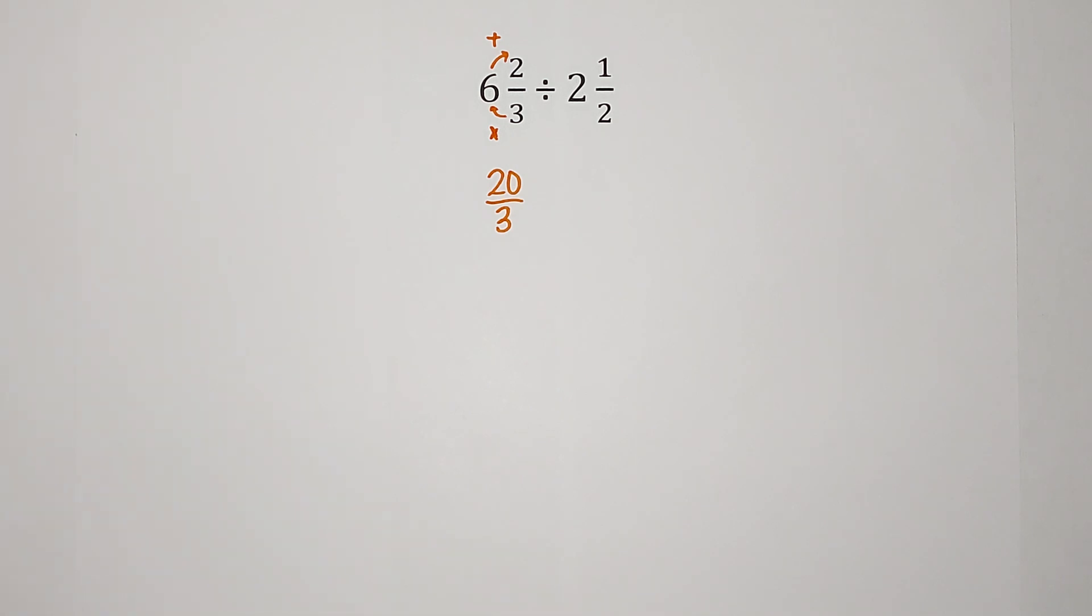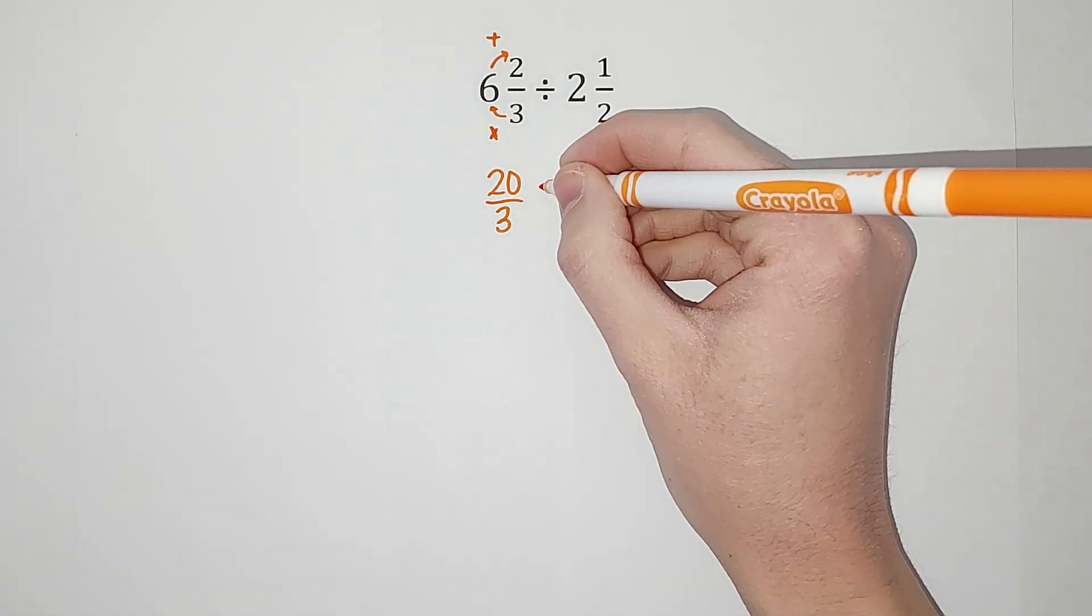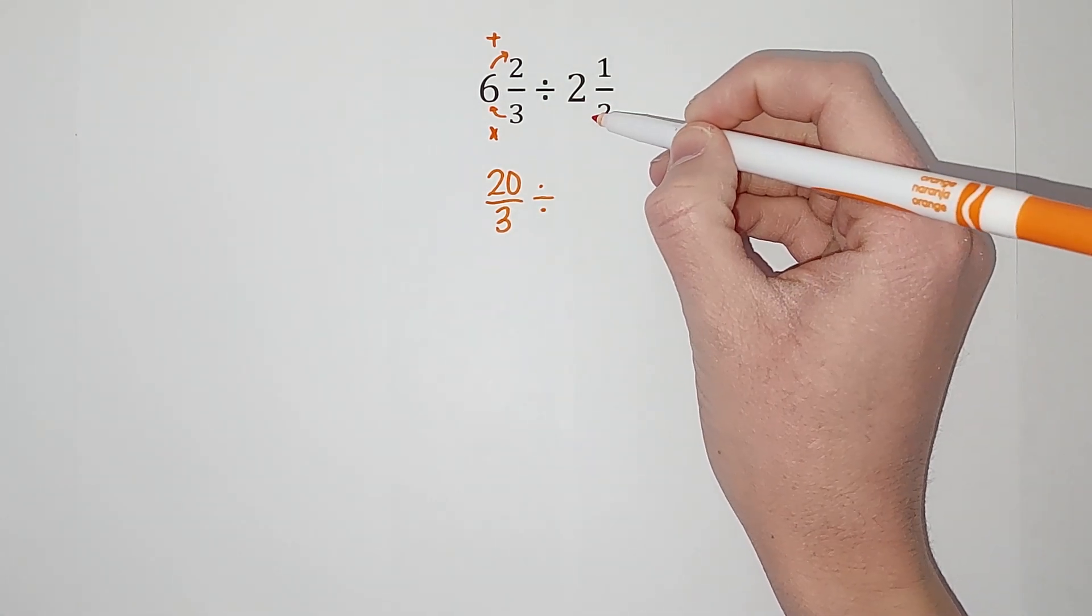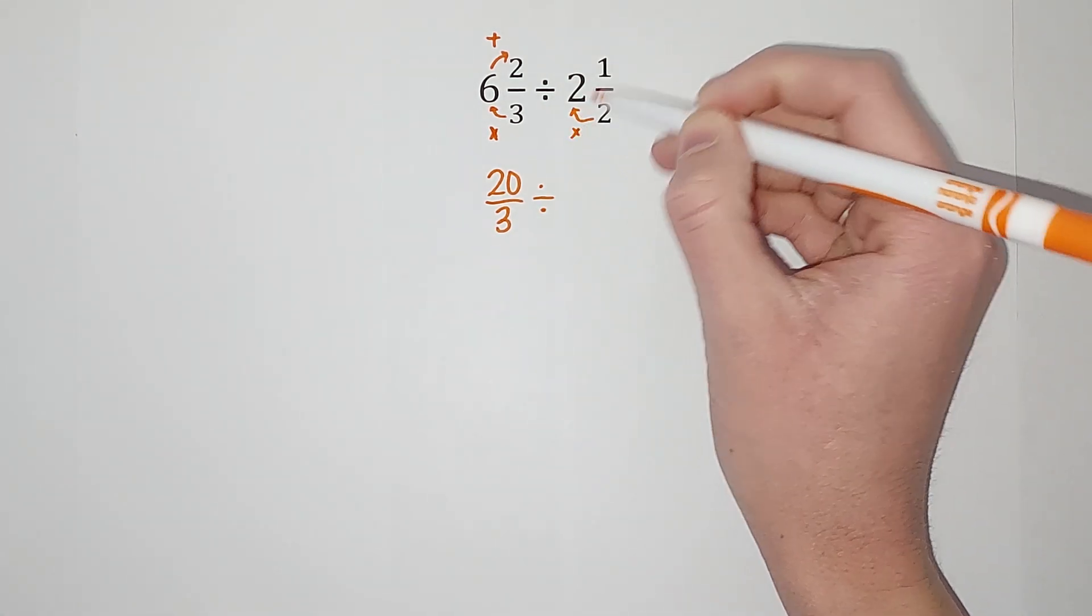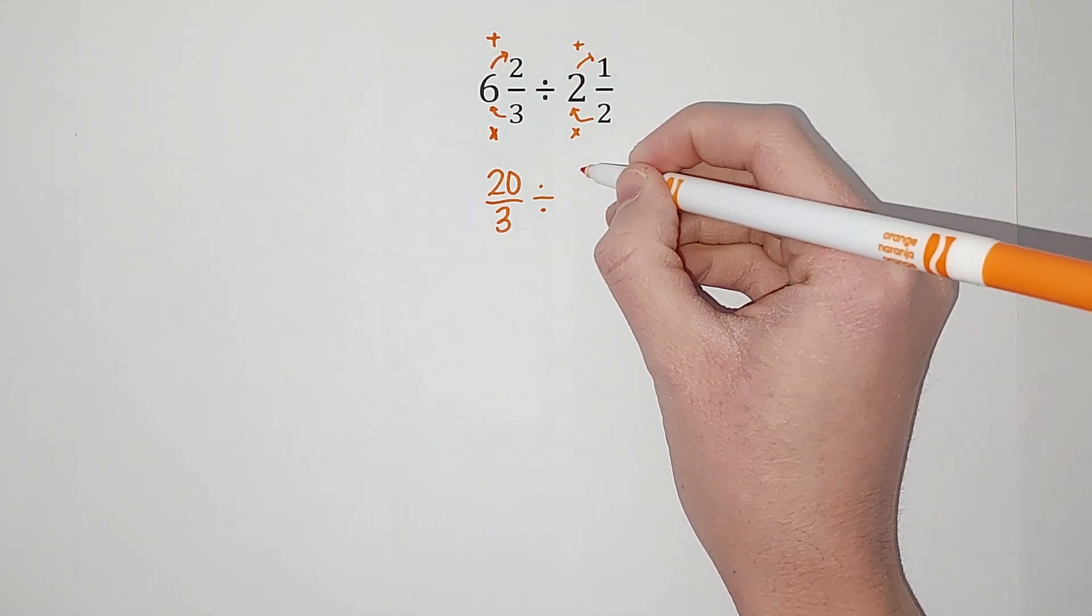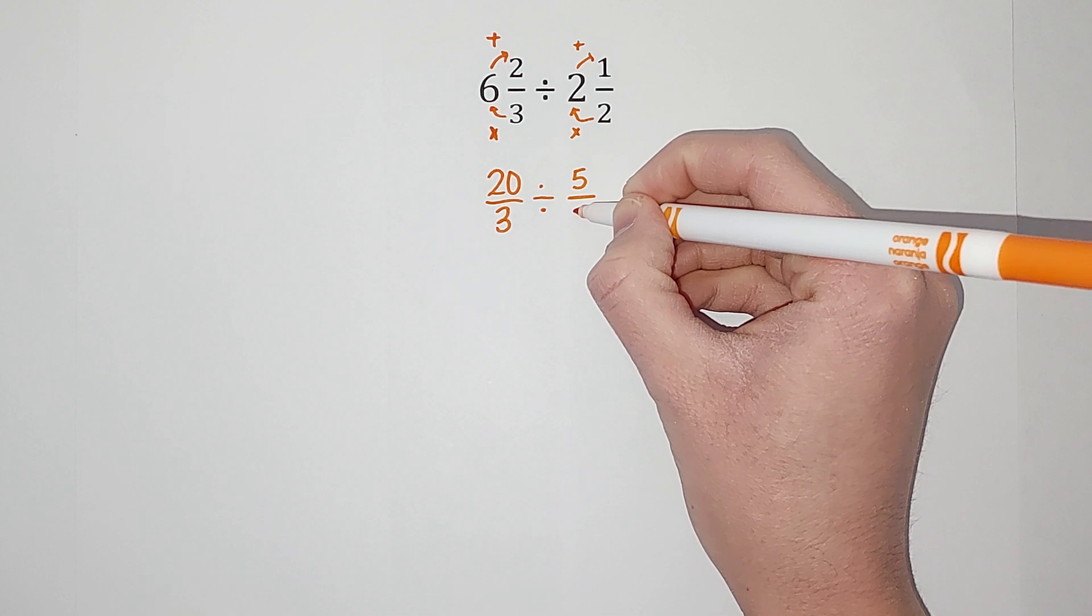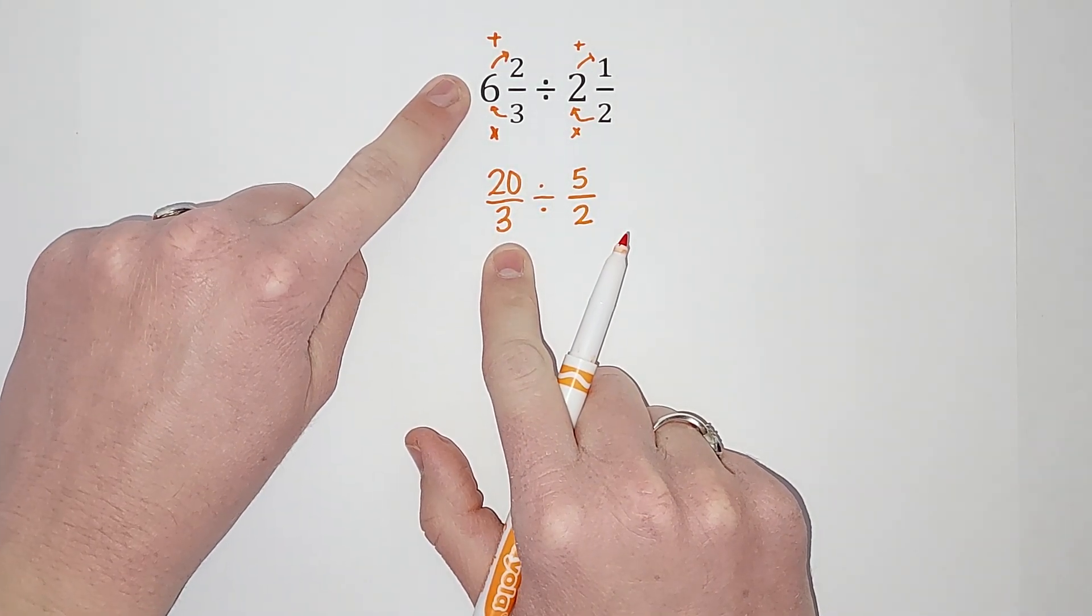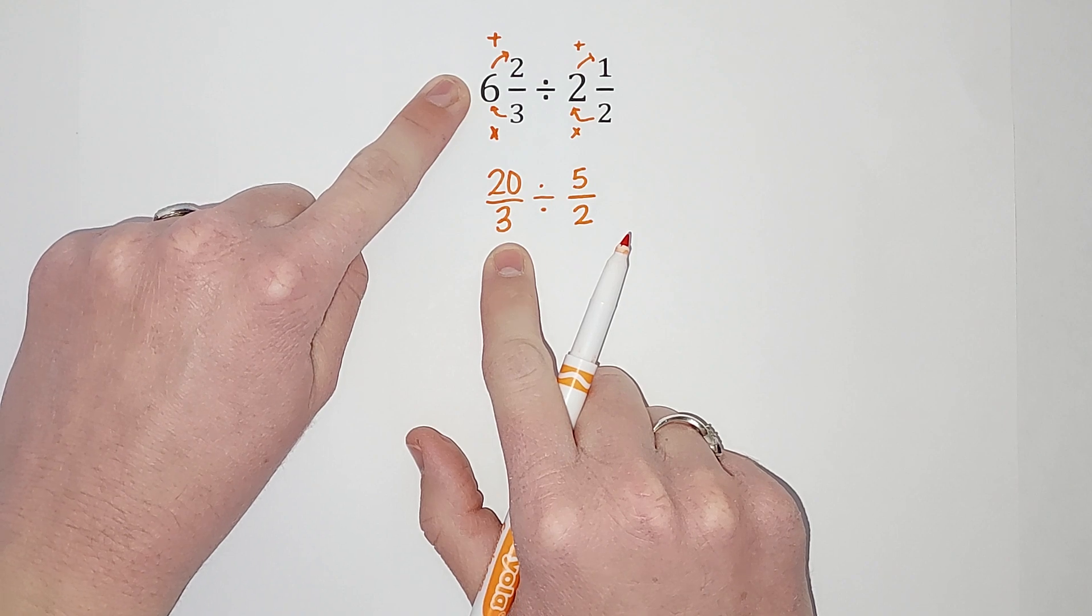All right, so we are dividing this by two and a half, so we're gonna do the same thing. Two times two gives me four plus one gives me five, and we're still over two. So this fraction and this fraction are the same fraction just written differently. Same with this one and this one.